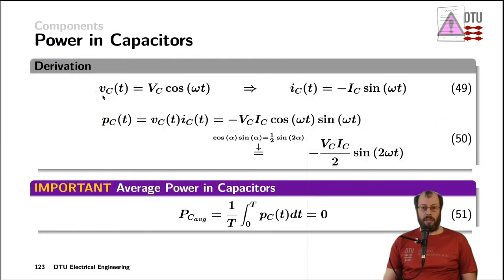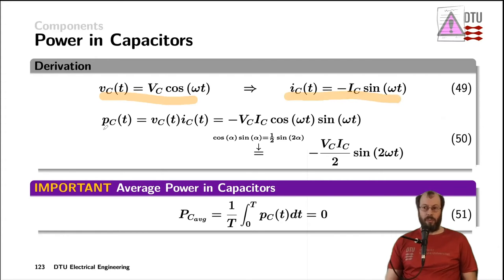For a capacitor, the math is very similar. Again, we define a test signal — here the voltage across the capacitor — to be a cosine waveform. As the voltage is ahead of the current by 90 degrees, the current through the capacitor is a minus sine wave. The instantaneous power in the capacitor is again the multiplication of the voltage as a function of time times the current as a function of time, which leads to the exact same equation as for the inductor, with the only difference that now we have a minus sine in front of it.